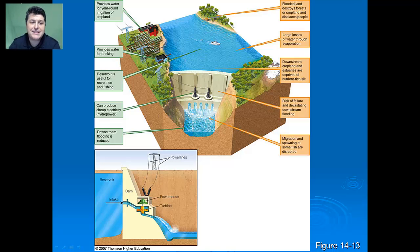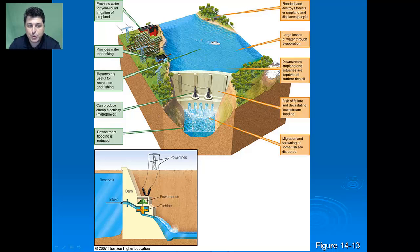Here's what a basic hydroelectric dam looks like. We produce a dam across the mouth of a river, and as water builds up it floods the surrounding land. Then periodically we release water so it flows over turbines to produce cheap electricity.